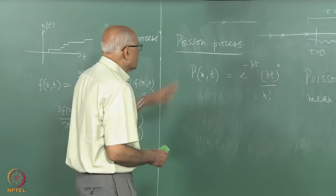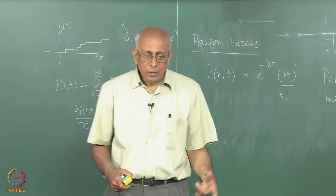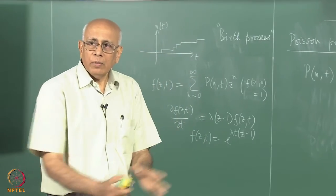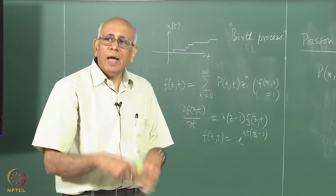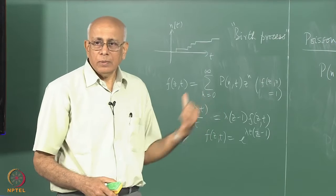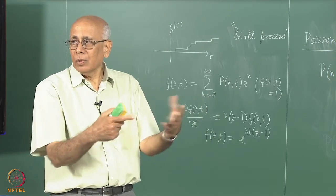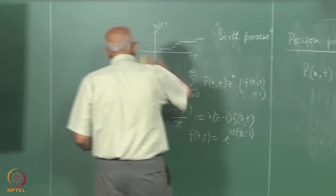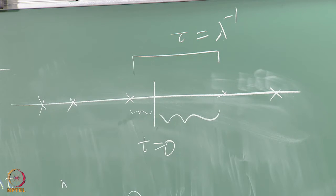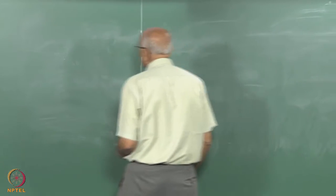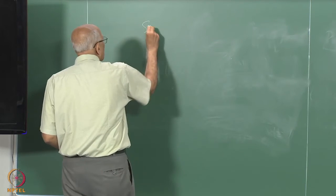So much for the Poisson process. We will look at other processes governed by a Poisson process — a whole family of random walks where something else happens at instances of time given by a Poisson process. The Poisson process drives what happens next. Let's look at an example, beginning with the so-called simple random walk.